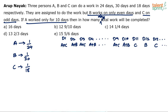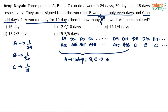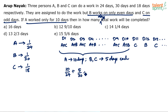In the first 10 days: A has worked all 10 days, B has worked 5 days (2nd, 4th, 6th, 8th, 10th), and C has worked 5 days (1st, 3rd, 5th, 7th, 9th). Work done: A contributes 10/24, B contributes 5/30, and C contributes 5/18.